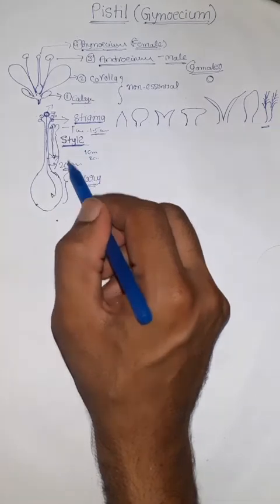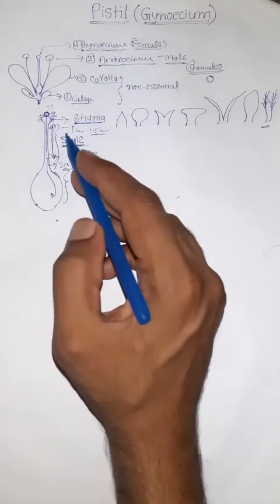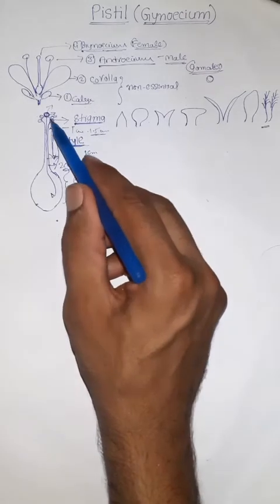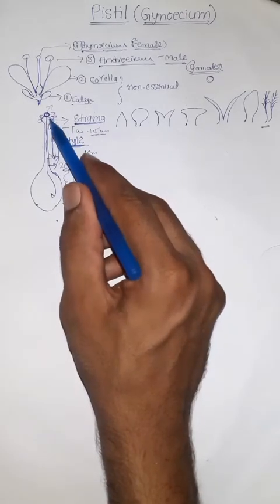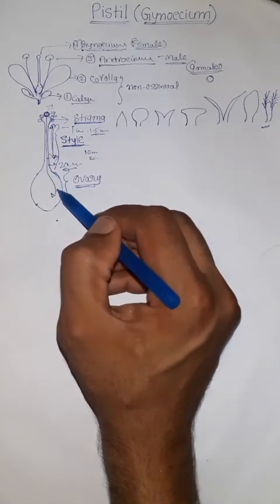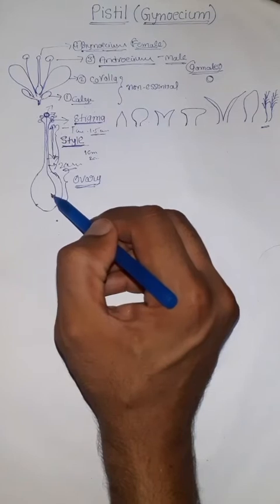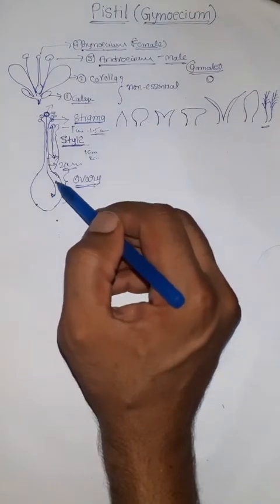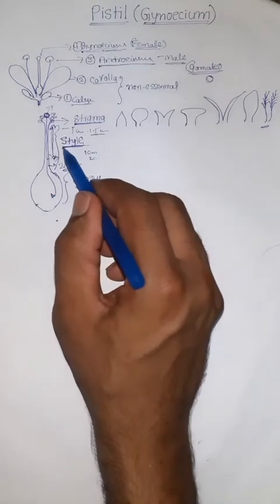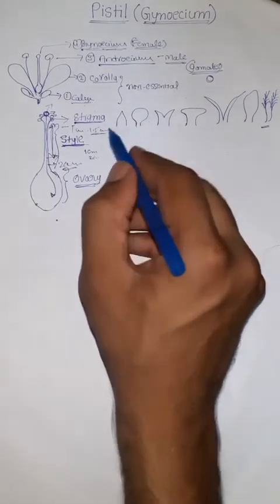Only the eligible or suitable pollen grains successfully develop a pollen tube up to the required length and finally reach their destination. That is the main function of Style.